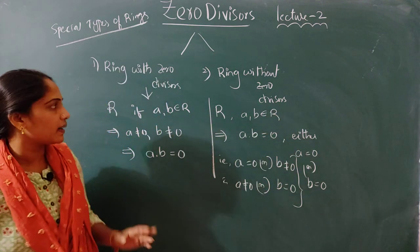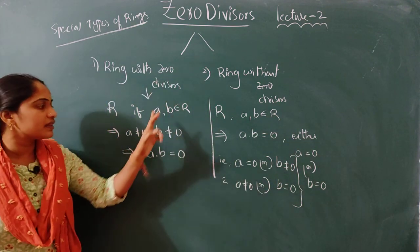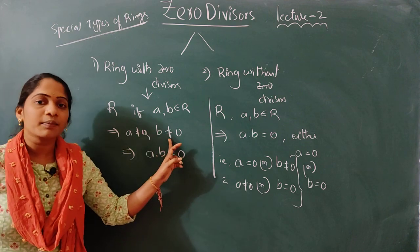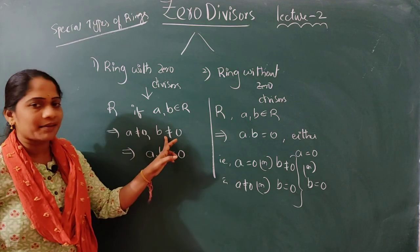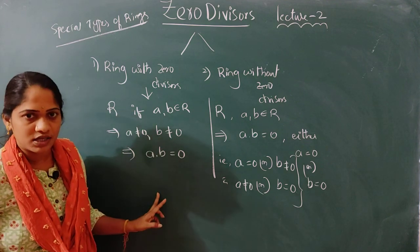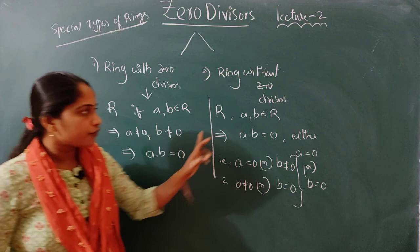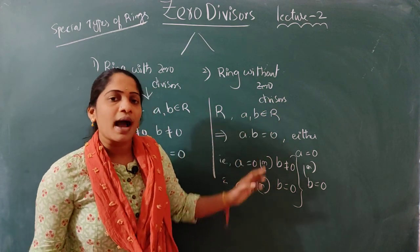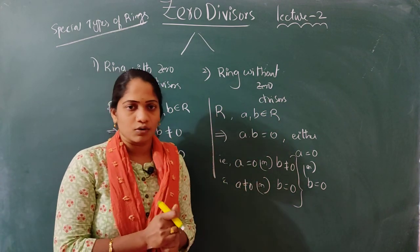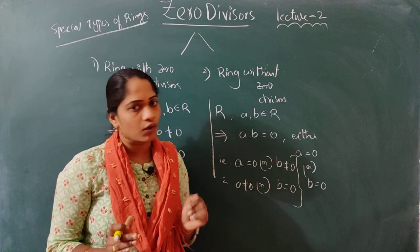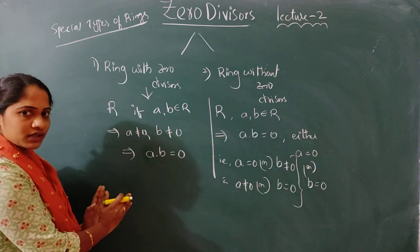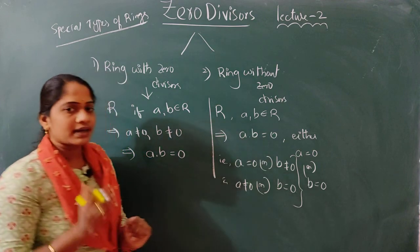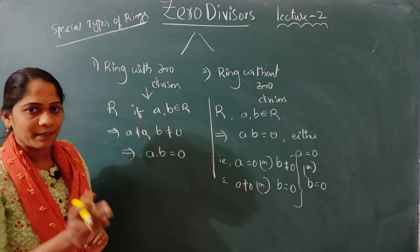So now remember: ring with zero divisors means two non-zero elements whose product is zero. Ring without zero divisors means if the product is zero, then either A or B is zero. Let's see an example to make this clear.